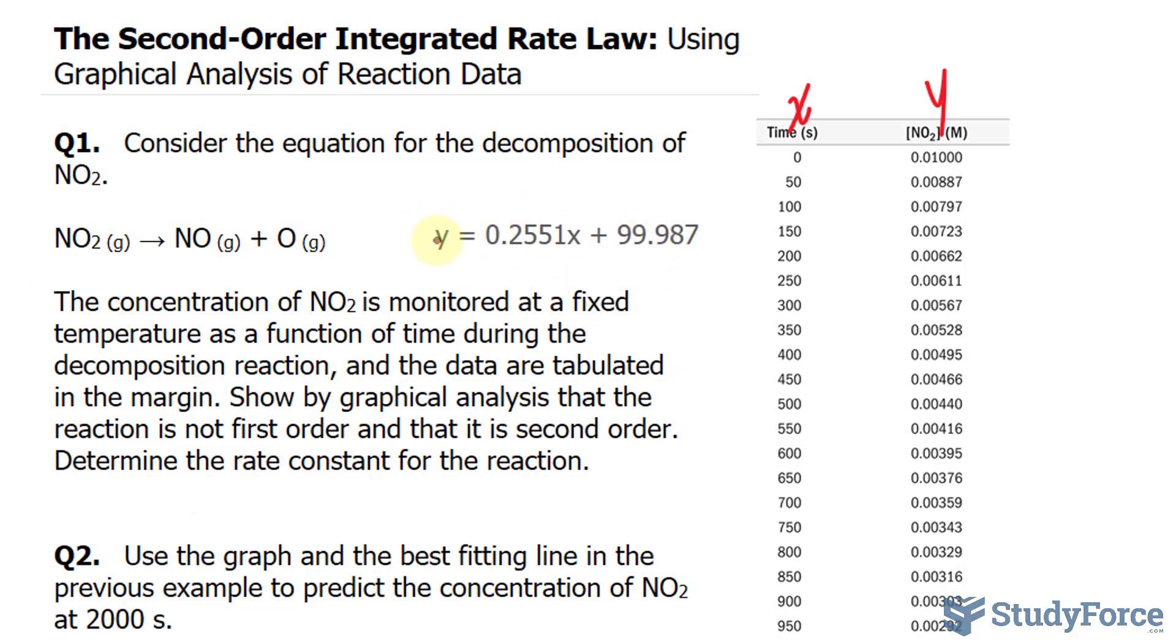And from this, we can actually determine the rate constant. The rate constant will be the slope. So the rate constant for this reaction is 0.2551. And for second-order reactions, the units are in 1 over molars times seconds.